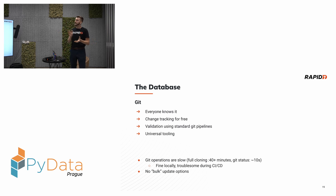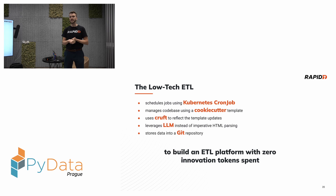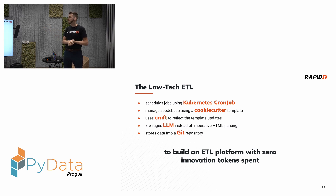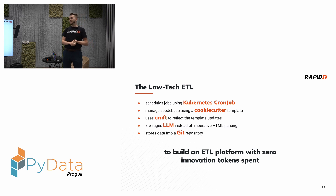And that's our low-tech ETL: it schedules jobs using Kubernetes cron jobs, we manage the codebase using Cookiecutter as a template with Cruft to reflect updates, it leverages LLMs instead of imperative HTML parsing — so instead of telling it how, we say what — and we store data in a Git repository. That's how we built an ETL platform with zero innovation tokens spent, using just the tools we were already using.